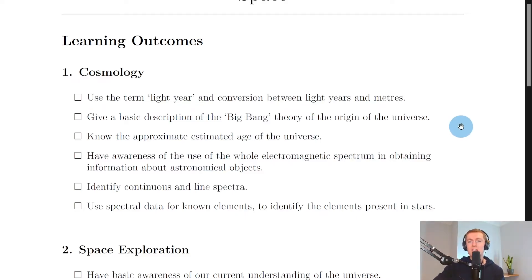It then says you need to give a basic description of the Big Bang theory of the origin of the universe. So remember, the Big Bang theory suggests that the universe started as an infinitely hot, infinitely dense single point of matter called a singularity, and that the universe rapidly expanded or inflated from this single point. Over time, the universe has cooled down—its temperature has decreased—and we're now at an average temperature of about 2.7 Kelvin.